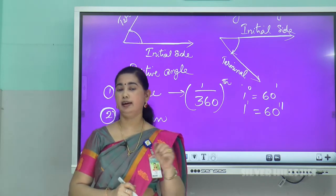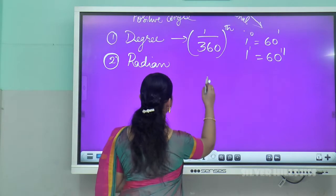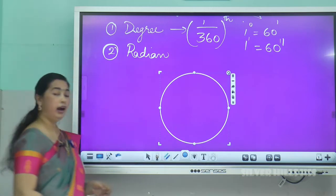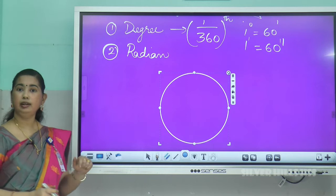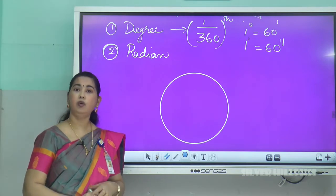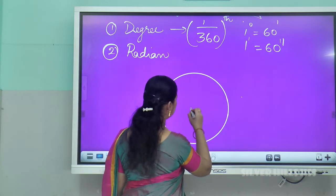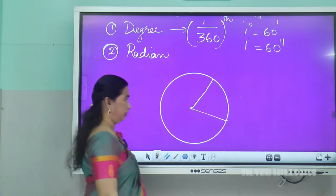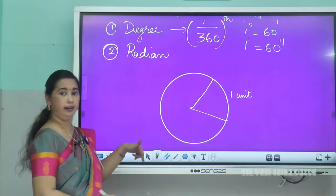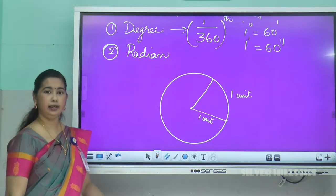Now, what is radian measure? One radian is the angle subtended by an arc of length 1 unit at the center of a unit circle. Suppose an arc has length 1 unit and the circle is a unit circle — that is, its radius is also 1 unit — then the angle subtended at the center is called 1 radian.